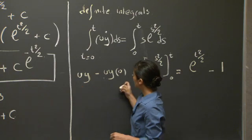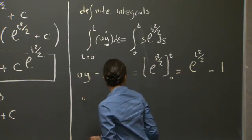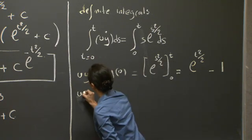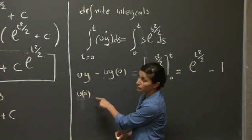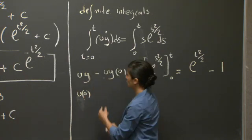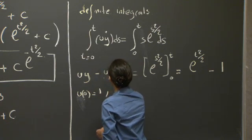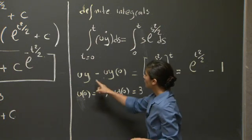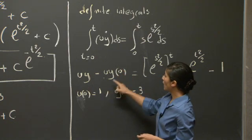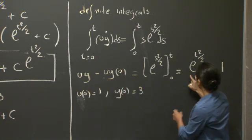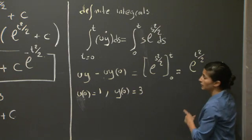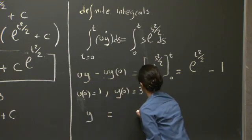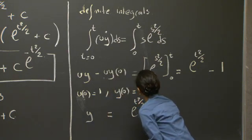Now for the left-hand side: we have u·y minus u(0)·y(0). Since u(0) = e^(0²/2) = 1 and y(0) = 3 from our initial condition, this becomes u·y minus 3. Setting this equal to e^(t²/2) minus 1, and then multiplying through by 1/u = e^(-t²/2), we get the full expression.